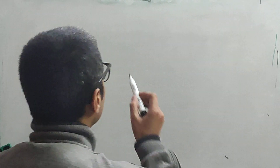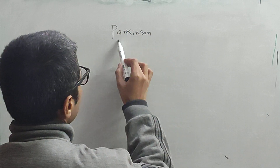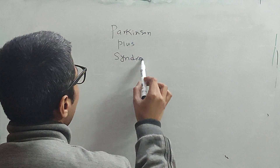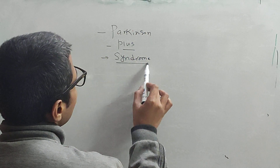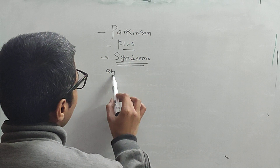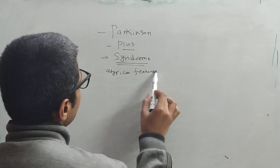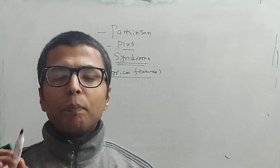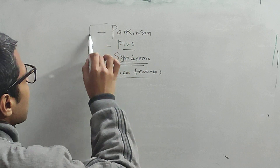Today we will be talking on a topic called Parkinson's Plus Syndrome. As the name implies, it is Parkinsonian features plus some other features that we call atypical features, that do not fit in the category of idiopathic Parkinson's disease. If those atypical features are present, then we lump those symptoms under this umbrella called Parkinson's Plus Syndrome.